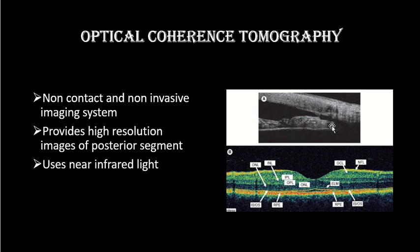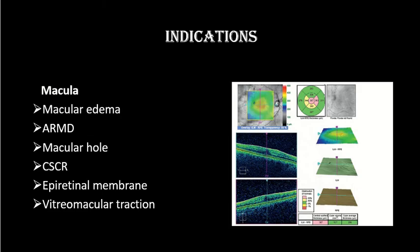This is an anterior segment OCT which shows the angle of the anterior chamber. By using this OCT we can also measure the corneal thickness — this is the cornea, this is the anterior chamber, this is the iris — and we can see the angle of the anterior chamber with the help of optical coherence tomography.